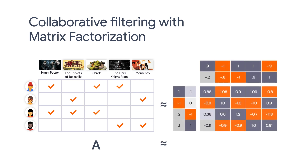Matrix factorization is a commonly used method for building recommendation systems. The basic idea is that we have a rating matrix that contains the ratings for a set of movies from a group of users. The rating matrix is pretty sparse, so we need to find a way to predict the ratings for movies that are not rated by the users, while keeping the predicted scores as close to the ground truth ratings as possible. To do so, we want to learn a user embedding matrix U and a movie embedding matrix V transpose. This is why it's called matrix factorization. Please check out this link to my other video to learn more about matrix factorization.